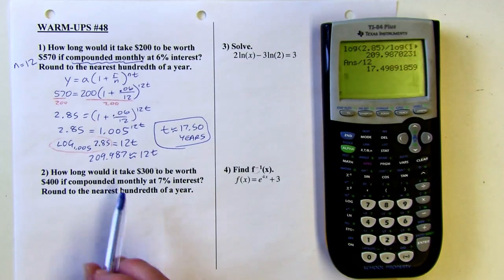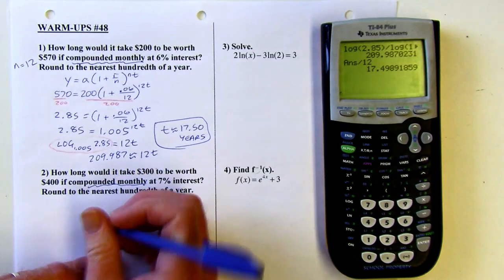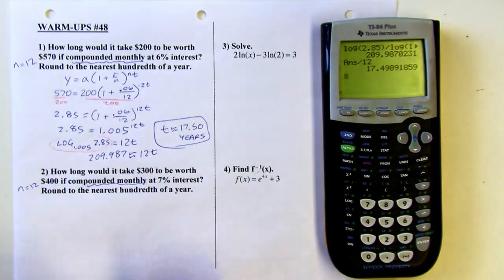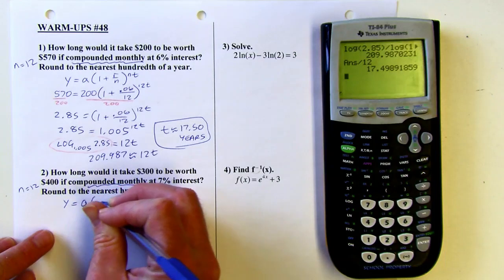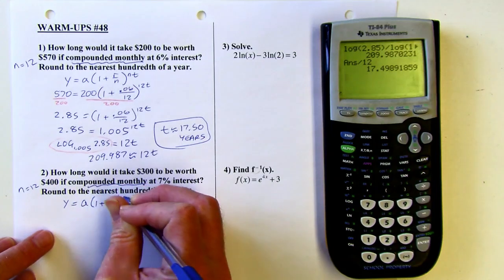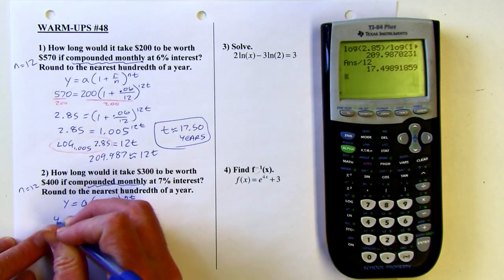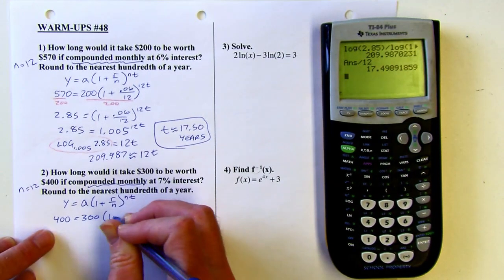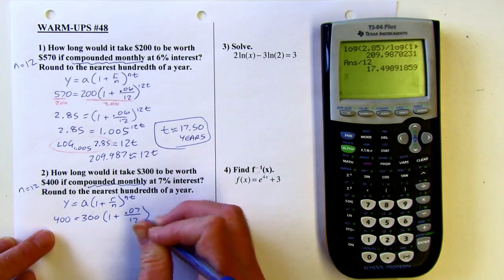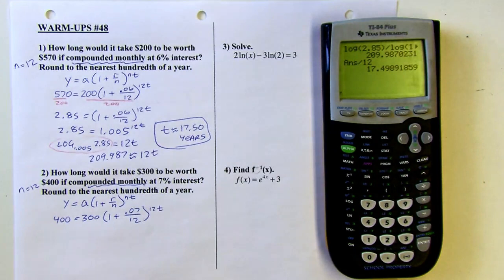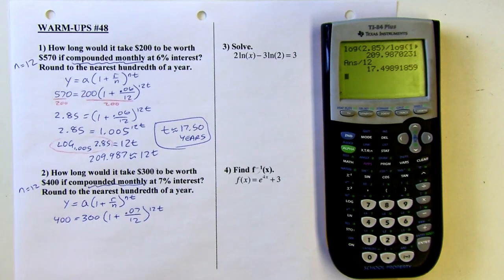Next up, how long would it take for $300 to be worth $400 if compounded monthly? We're compounding monthly again. So again, n is going to equal 12, 12 months in a year. Again, we're using this same formula. Beginning amount is $300. Finishing amount is $400. Rate is 7%. That's .07 as a decimal. 12 is n. Only thing we're missing is the t. So we're going to simplify this pretty much the same way as we did in the last one. So I'll divide both sides by 300 first.